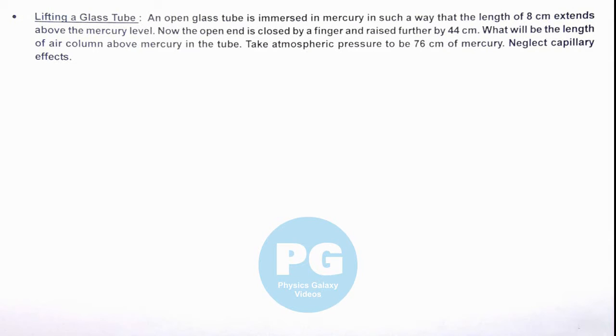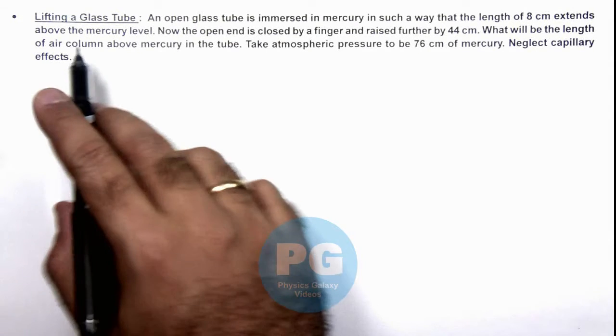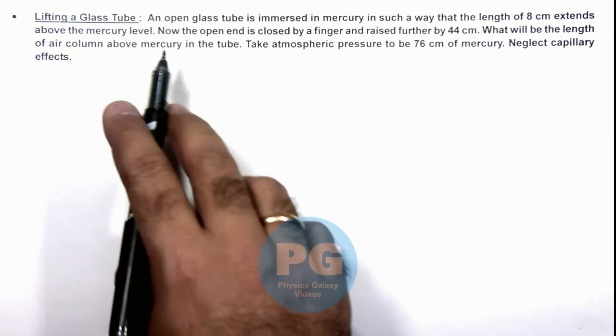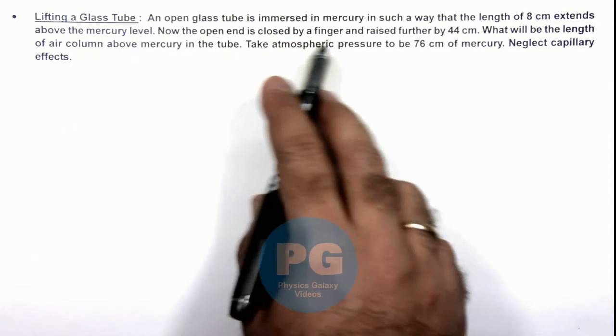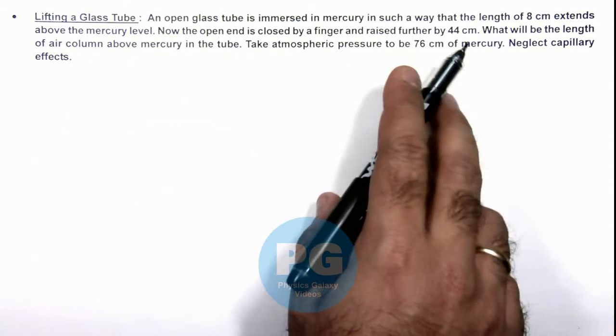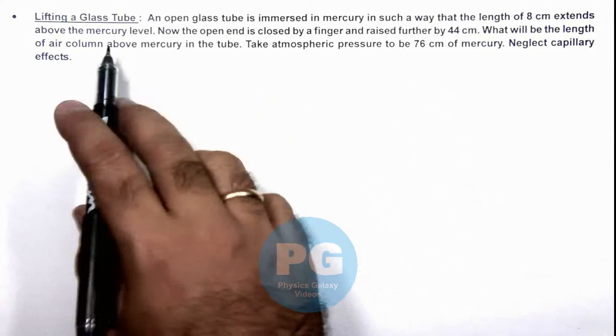In this illustration we'll discuss a case of lifting a glass tube. We are given that an open glass tube is immersed in mercury in such a way that the length of 8 centimeters extends above the mercury level.